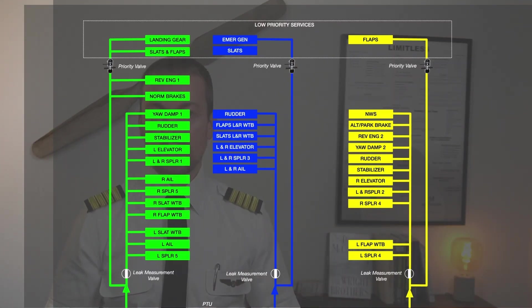Spoiler panels do not have redundancy as we talked about in flight controls, but the individual spoiler panels are connected either via the green, the blue or the yellow.